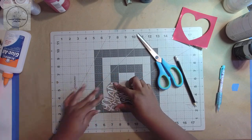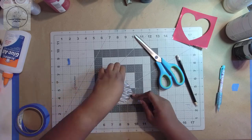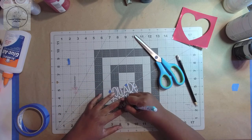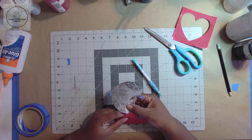Then, I taped the heart with the wording on it over the red painted heart to transfer the lettering. I traced over the lettering, checking every so often to make sure it was transferring nicely. Then, I removed the heart with the wording on it.